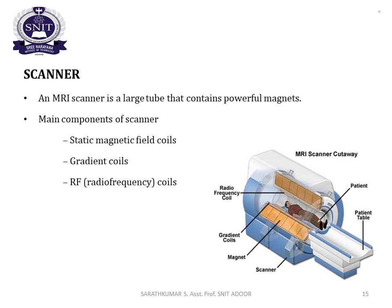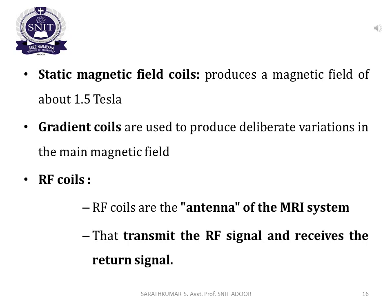The main components of the MRI scanner are: static magnetic field coil, gradient coil, and radio frequency coil. The static magnetic field coil produces a magnetic field of about 1.5 tesla. Gradient coils are used to produce deliberate variations in the main magnetic field. Radio frequency coils are the antenna of the MRI system that transmit radio frequency signals and receive the return signals.